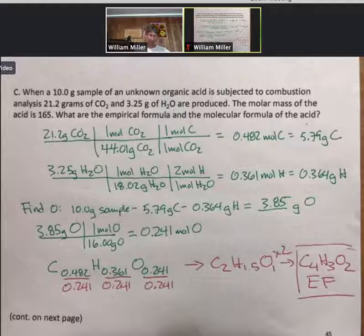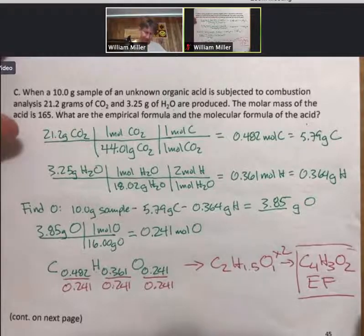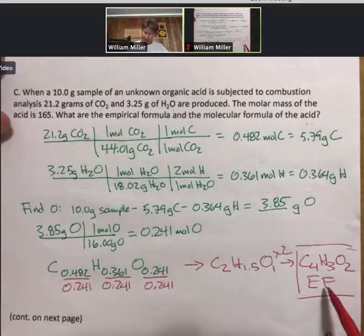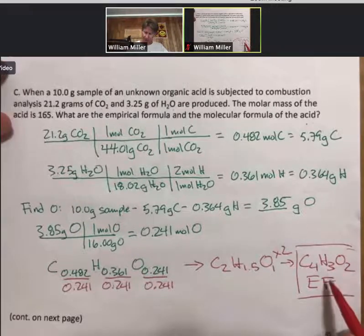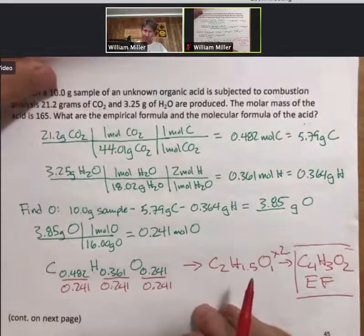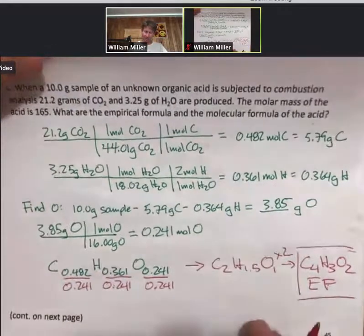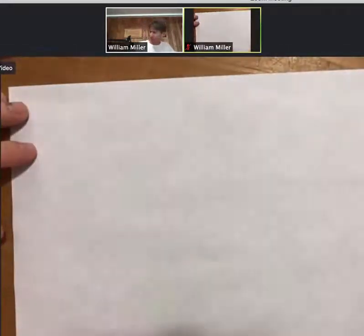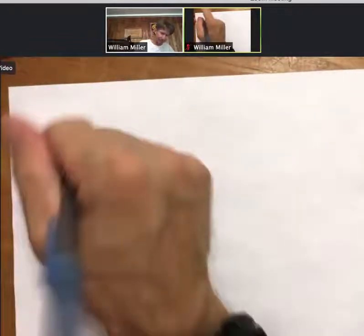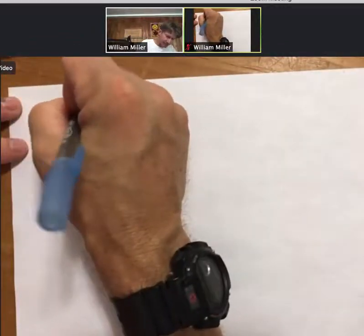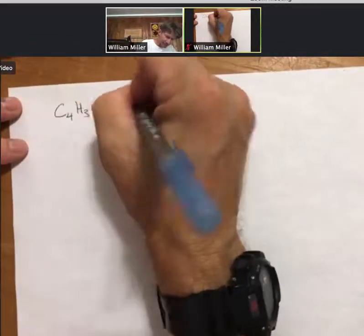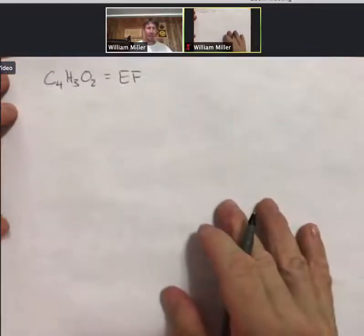Now, here's the new part for this problem. The new part says okay, I have my empirical formula, it is C4H3O2, and I'm going to write that on the next page. That is my empirical formula.